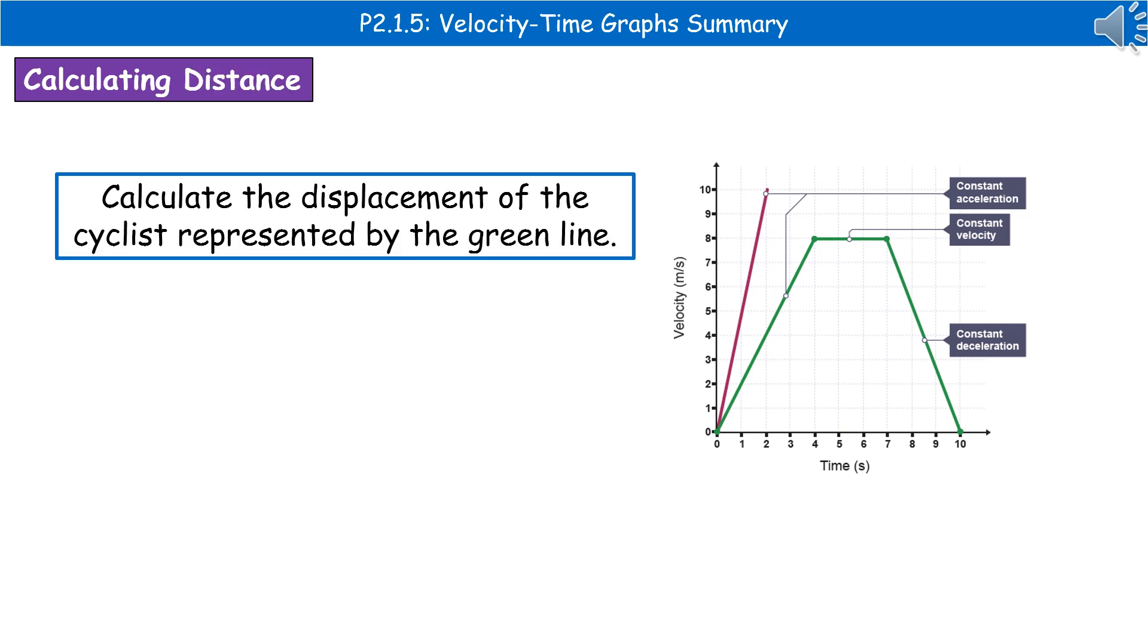We could get a question like: calculate the displacement of the cyclist represented by the green line. And they give you a graph like I have on the right there.